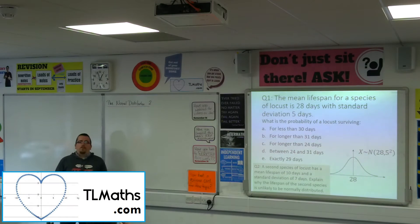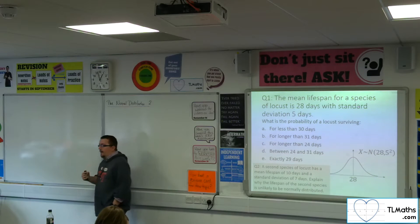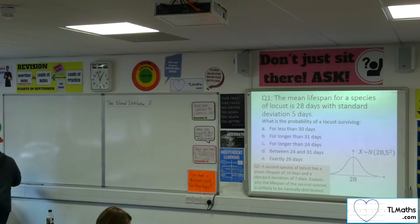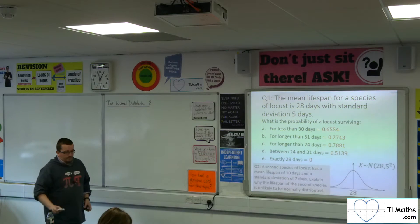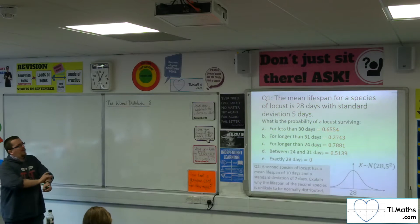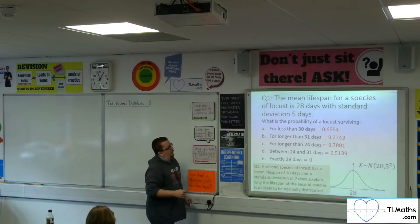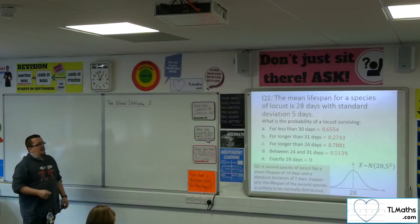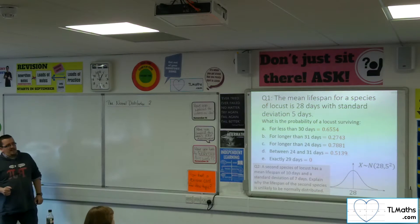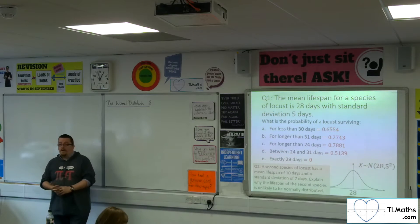With these questions on the board, A, B, C, D and E are basically what we were looking at last time with just finding basic probabilities. So, 0.6554 for A, 0.2743 for B, 0.7881 for C, 0.5139 for D, and exactly 29 days. Remember, exactly one figure for a normal distribution is zero because you find the area of a line.